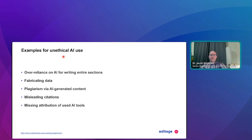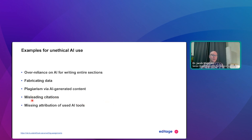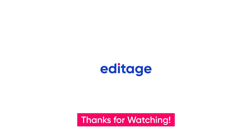Examples of unethical AI use include over-relying on it for writing entire sections, fabricating data, and plagiarizing papers via AI-generated content — don't just copy other papers with AI hoping to pass the editors. Also watch out for the pitfall of misleading citations: your AI-generated content may not attribute the original source, so you could be missing citations. Be very careful about this.